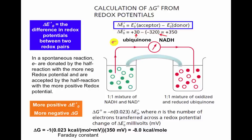To reinforce: the change in redox potential is the difference in redox potential between the two redox pairs, always subtracting the redox potential of the donor from the redox potential of the acceptor.